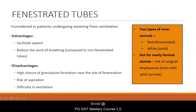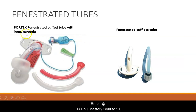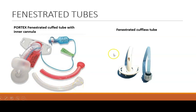With a fenestrated tube, especially the one provided by Portex company, there are two types of inner cannula: a red fenestrated inner cannula and a white solid inner cannula. You must always remember that fenestrated tracheostomy tubes are not for newly formed stomas, because even with a solid cannula there is a risk of surgical emphysema. Here you can see a Portex fenestrated cuffed tube with inner cannula showing the fenestrations, the cuff, the red fenestrated inner cannula, and the white solid inner cannula. On the right side is a fenestrated cuffless tube, which has a fenestra in the tube and inner cannula but no cuff.